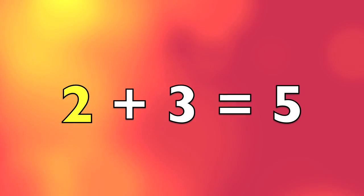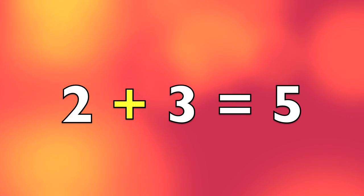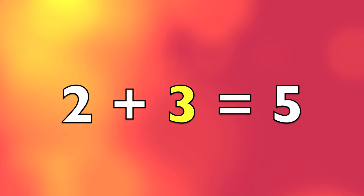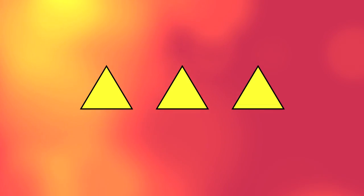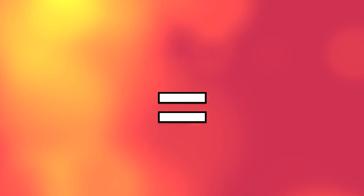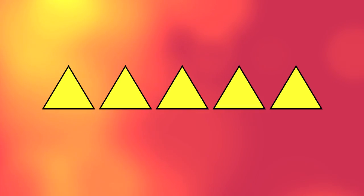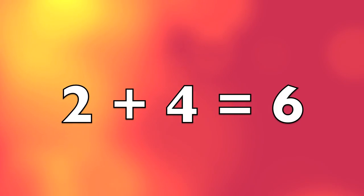2 plus 3 equals 5. 2 triangles plus 3 triangles equals 5 triangles.